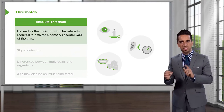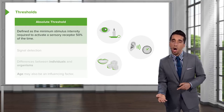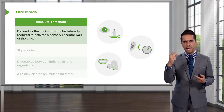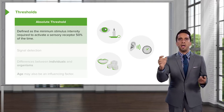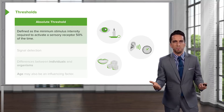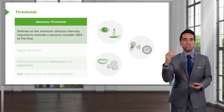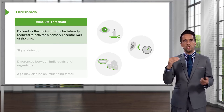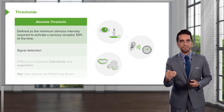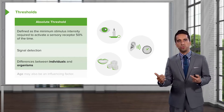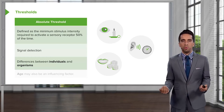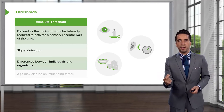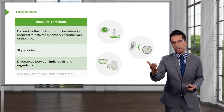Absolute threshold is defined as the minimum stimulus intensity required to activate a sensory receptor half of the time. Research has shown that at roughly three miles, if you have a candle in the dark at nighttime, you could detect that roughly 50% of the time. We say 50% because that's basically right at and above chance. We're establishing what is the signal detection. For most individuals there are some minor differences — some people whose signal detection is extremely great could see a candle at four miles, while others might need it at two miles.